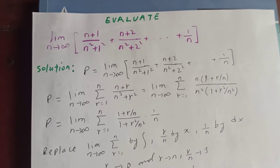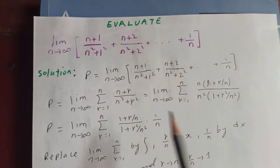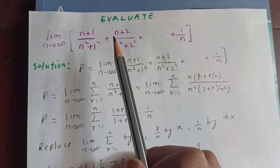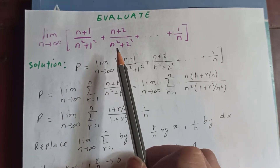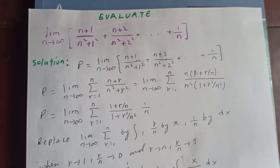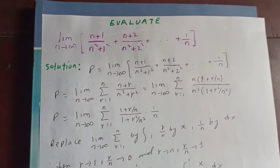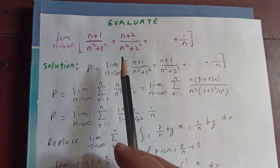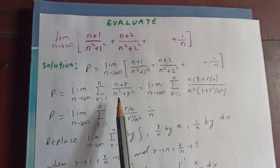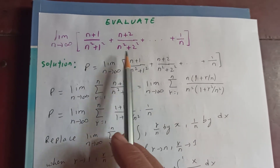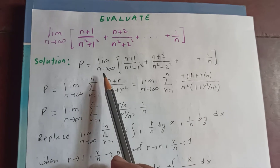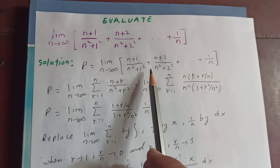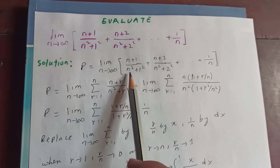Thanks for watching my video today. Let's try to evaluate this limit: the limit as n tends to infinity of n plus 1 by n squared plus 1 squared, plus n plus 2 by n squared plus 2 squared, and so on plus 1 by n. I have already proved that these types of limits can be converted into a definite integral.